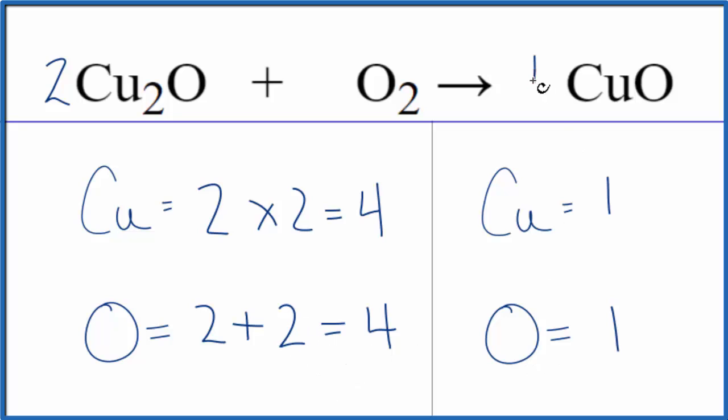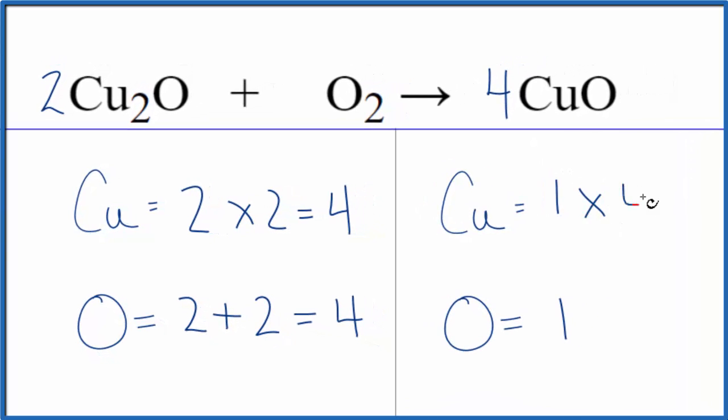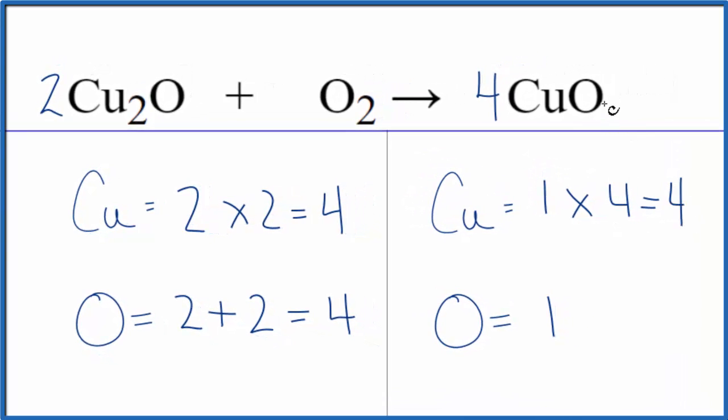And then all I need to do is put a 4 in front of the copper 2 oxide. 1 times 4, that would give me four. And then the oxygen, 1 times 4, that would give me four. And we'd be done. This equation is balanced.